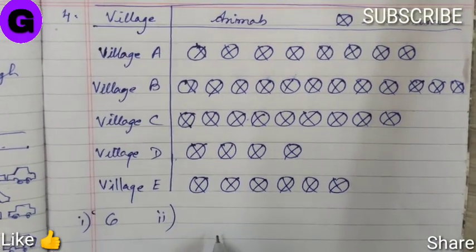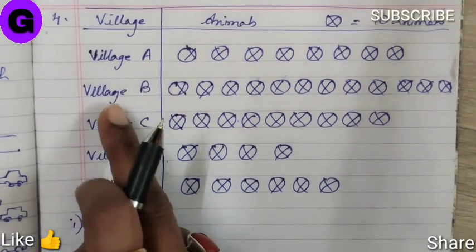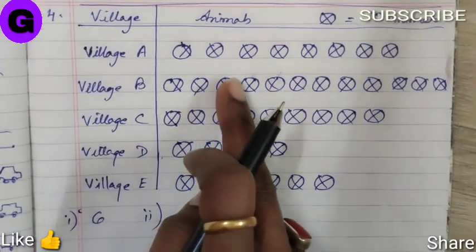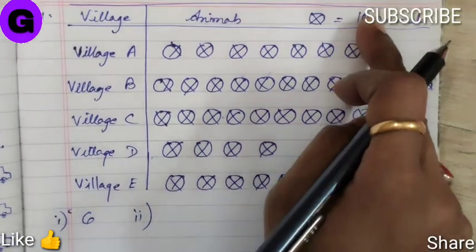Question 2: Which village has the maximum number of animals? Village B has 12 symbols, and 12 times 10 equals 120. So Village B is the answer.